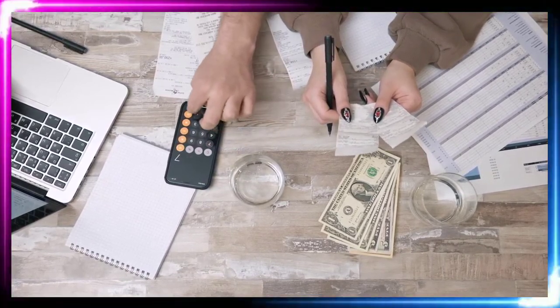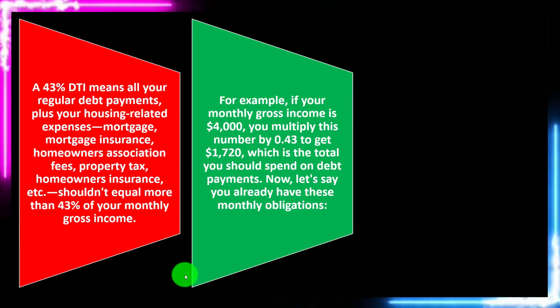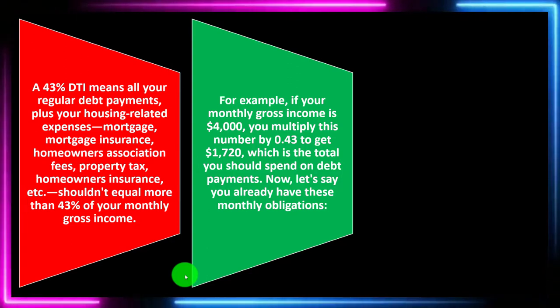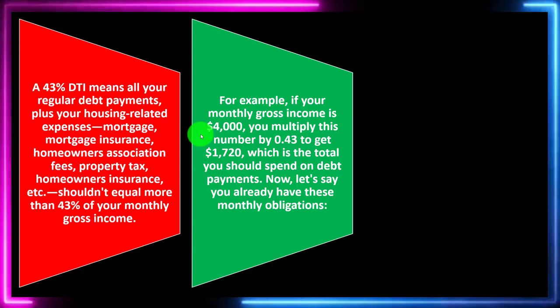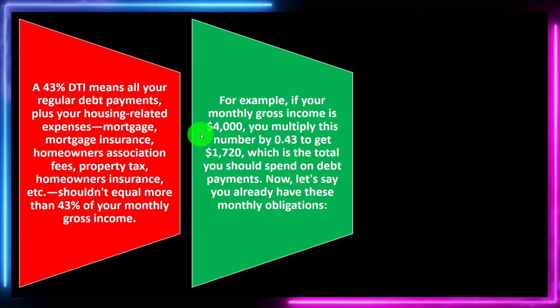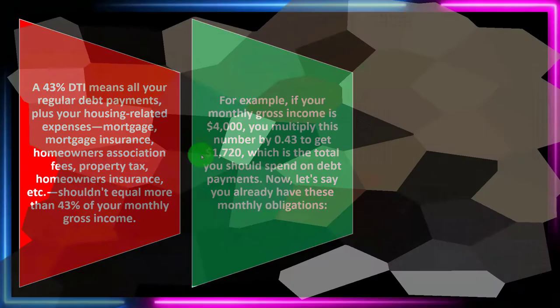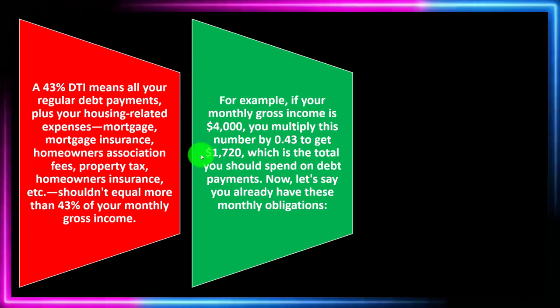A 43% DTI means all your regular debt payments plus housing-related expenses — mortgage, mortgage insurance, homeowners association fees, property tax, homeowners insurance, etc. — shouldn't equal more than 43% of your monthly gross income. For example, if your monthly gross income is $4,000, you multiply by 0.43 to get $1,720, which is the total you should spend on debt payments. This helps you estimate how much you might be able to afford and what the bank's heuristics would yield. Once you get this amount, you can trim it down to estimate the actual mortgage payment and determine how much loan you might be able to get, assuming a loan term like 30 years and an interest rate.